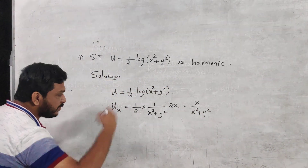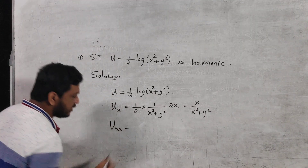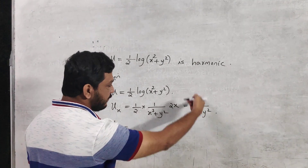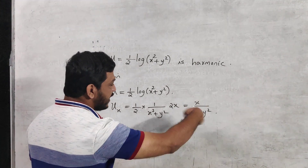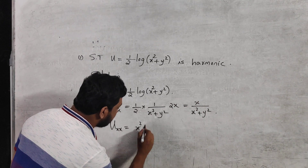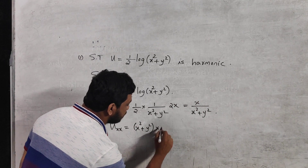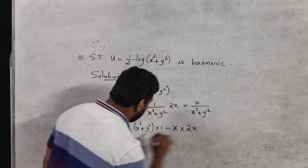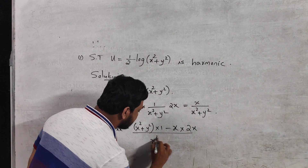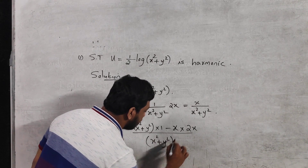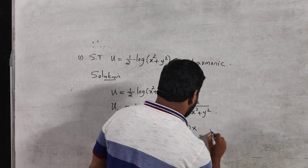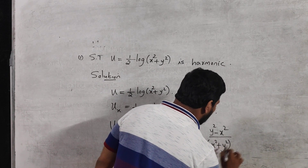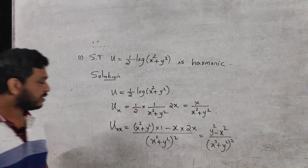Now computing the second order partial derivative uxx = ∂²u/∂x². Applying the quotient rule: denominator times differentiation of numerator (which is 1) minus numerator times differentiation of denominator (which is 2x), divided by denominator squared. So uxx = (y² − x²) / (x² + y²)².